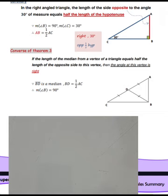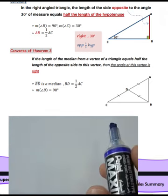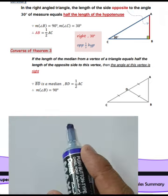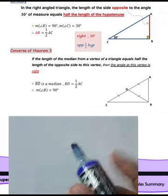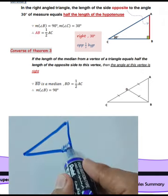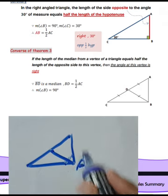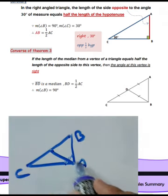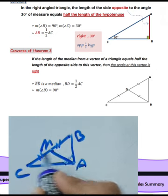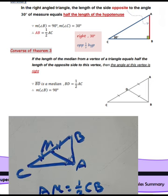Converse of Theorem 3: if the length of the median from a vertex of a triangle equals half the length of the opposite side, then the angle at that vertex is a right angle. So if EM equals half of BC, then the measure of angle A equals 90 degrees.